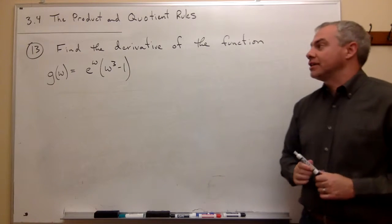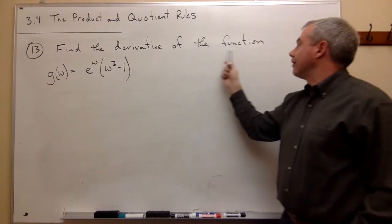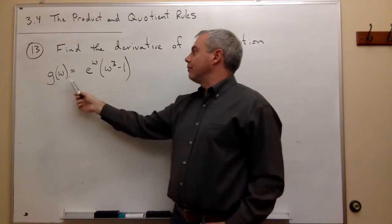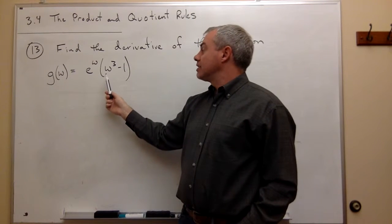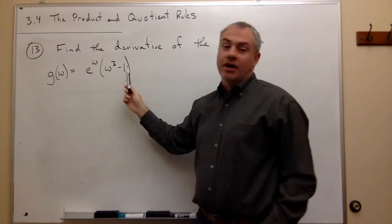In problem number 13, we want to find the derivative of the function g of w is equal to e to the w times w cubed minus 1.